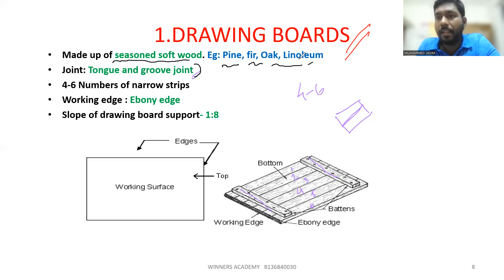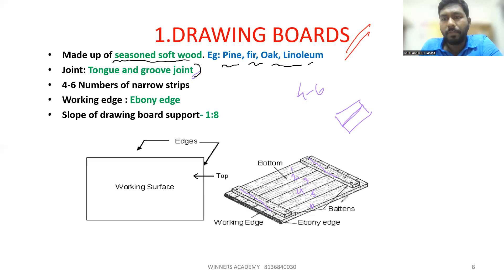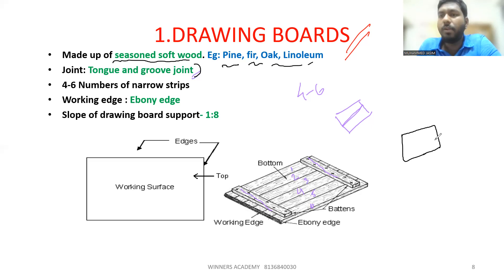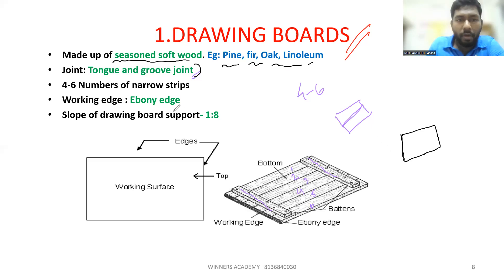Inside the material, we use pine, fir, oak, and linoleum. Once we use the narrow strips to keep this together, it is like joints — we use joints and grooves. We use the working edge. The drawing board is a rectangle shape. The drawing board is held in the left hand. We have to guide the T-square along the working edge.